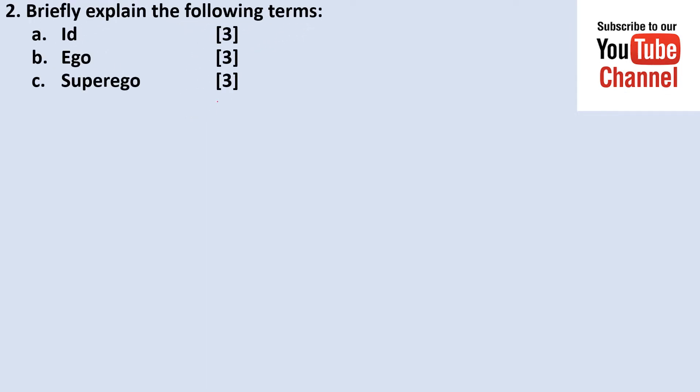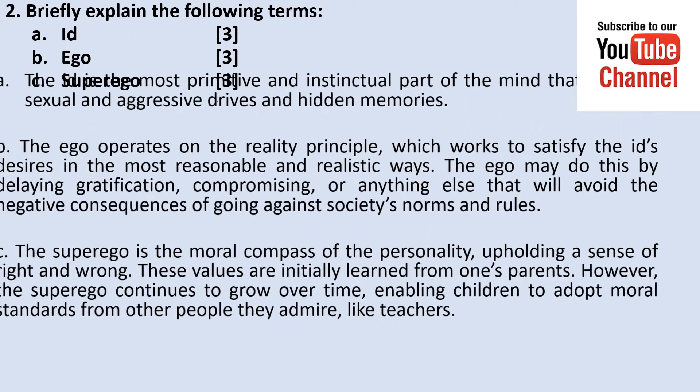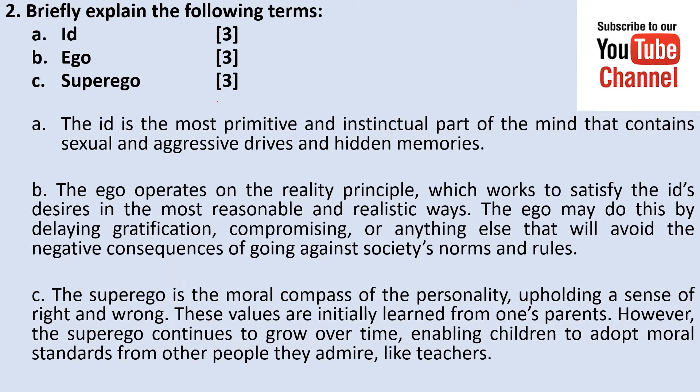Number two: briefly explain the following terms — id, ego, superego. From your studies, you will notice that these are psychoanalytic terms derived from the works of Sigmund Freud, and they denote the personality structures as propounded by Sigmund. The id is the most primitive part of the mind and contains the sexual and aggressive drives and hidden memories.